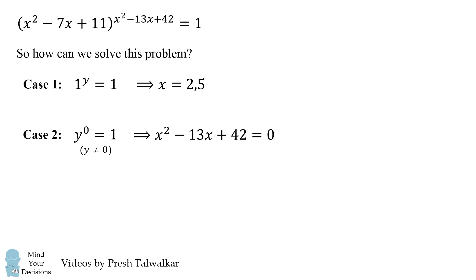This implies x^2 - 13x + 42 = 0. We can factor this into (x - 6)(x - 7). This will give two solutions of x = 6 and x = 7.